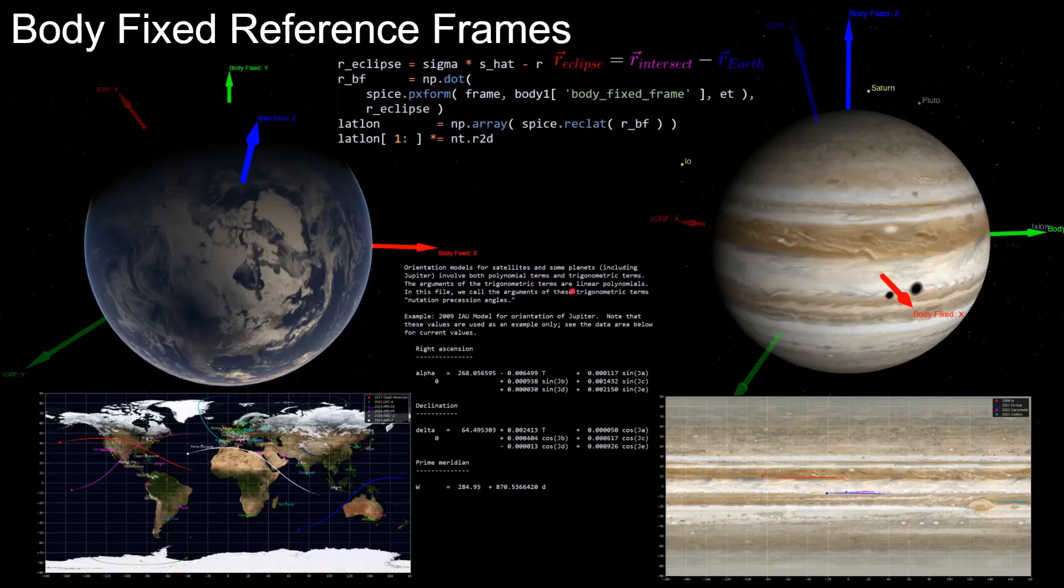In the spice kernel pck00010.tpc, the IAU planetary bodyfix reference frames are calculated using 313 Euler angles, which are calculated using linear and trigonometric terms. So they also account for the nutation and precession of the body spin axis, since those are not stationary in the inertial frame. So for example, earth spin axis precesses with a period of about 25,772 years.